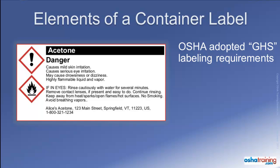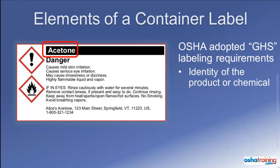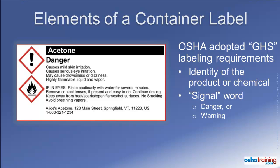Here is an explanation of the information that must appear on container labels. First is the product or chemical identifier — this may be the name of the product itself or, as in this label, the specific name of the chemical, and will match up to the Safety Data Sheet, or SDS, for the product. Next is a signal word. There are only two used in this system: either the word 'danger,' which indicates a relatively severe or immediate hazard, or 'warning,' which indicates a less severe but still potentially harmful level of hazard.